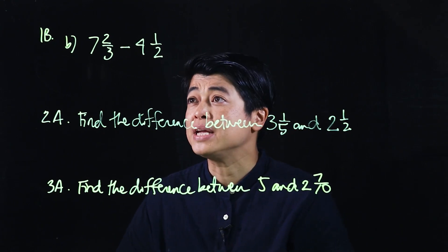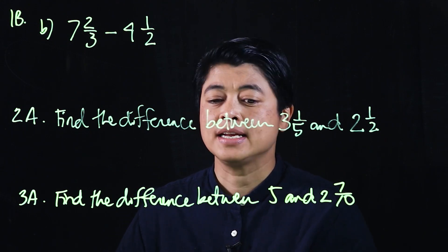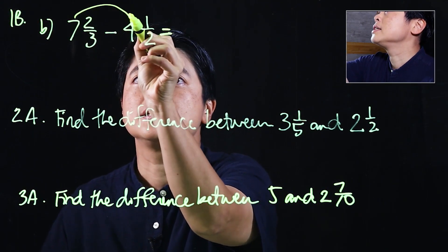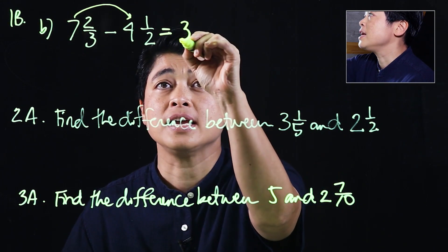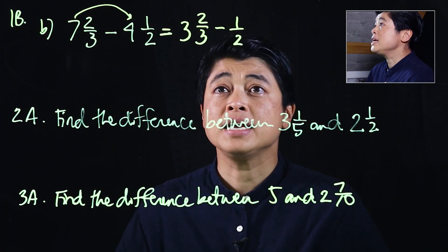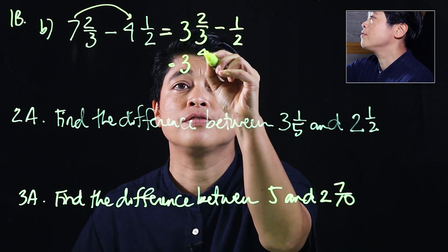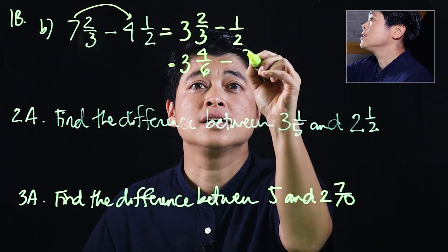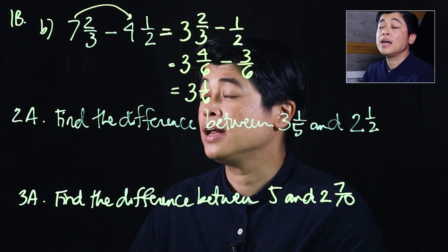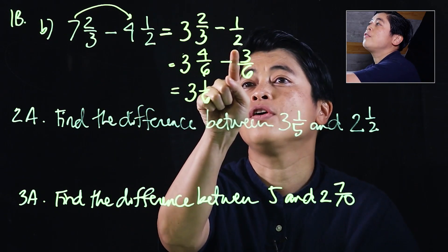Starting with 1b, we're supposed to subtract and express answers in simplest form. The book will subtract 7 minus 4, which is 3, keep the 2 thirds, then minus the 1 half. We want a common denominator, so that's 3 and 4 over 6 minus 3 over 6, which gives us 3 and 1 sixth. The whole number is handled first, and the fraction stays with the first whole number.